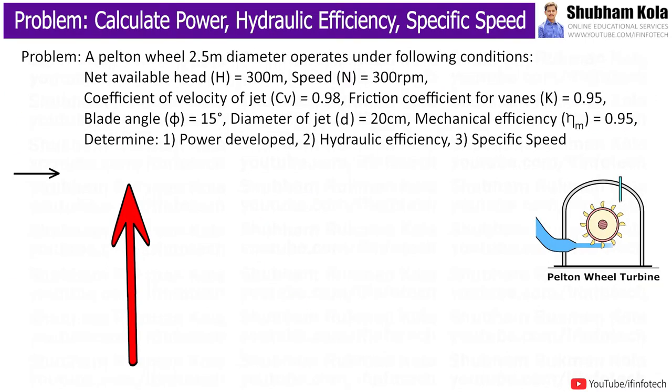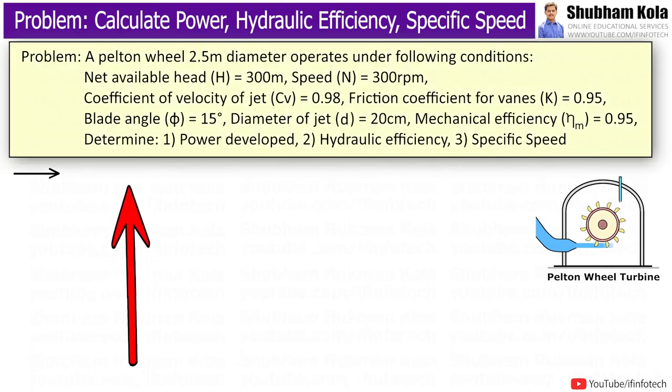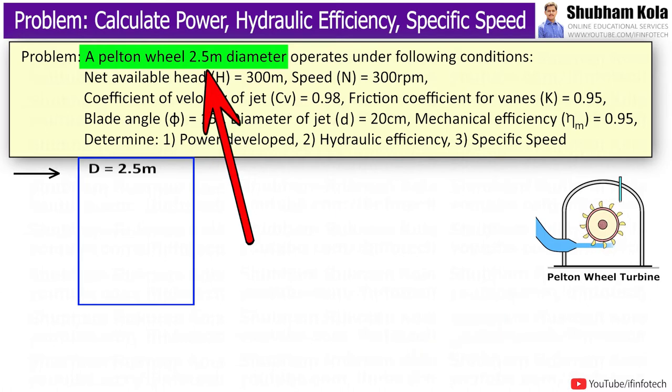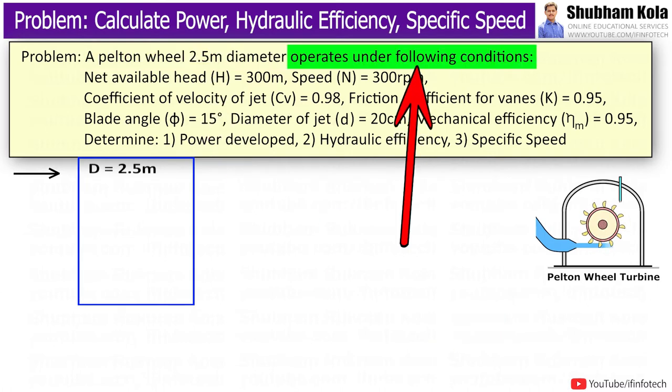So, with the help of those equations, today we are going to solve this numerical. So the statement is, a Pelton-wheel, 2.5m diameter, operates under the following condition.